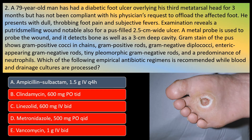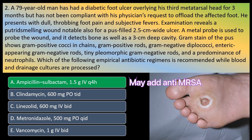Metronidazole and clindamycin are also not ideal: metronidazole covers only anaerobes, missing gram-positive organisms that are key initiators of diabetic foot infections, and clindamycin covers gram-positive organisms including MRSA and anaerobes but misses gram-negative rods also present in this gram stain. So the correct choice is ampicillin-sulbactam, which is a broad spectrum antibiotic covering all three classes of organisms except MRSA. If MRSA risk factors are present, you should add vancomycin, linezolid, or even daptomycin. The correct choice is ampicillin-sulbactam or any beta-lactam/beta-lactamase inhibitor combination.